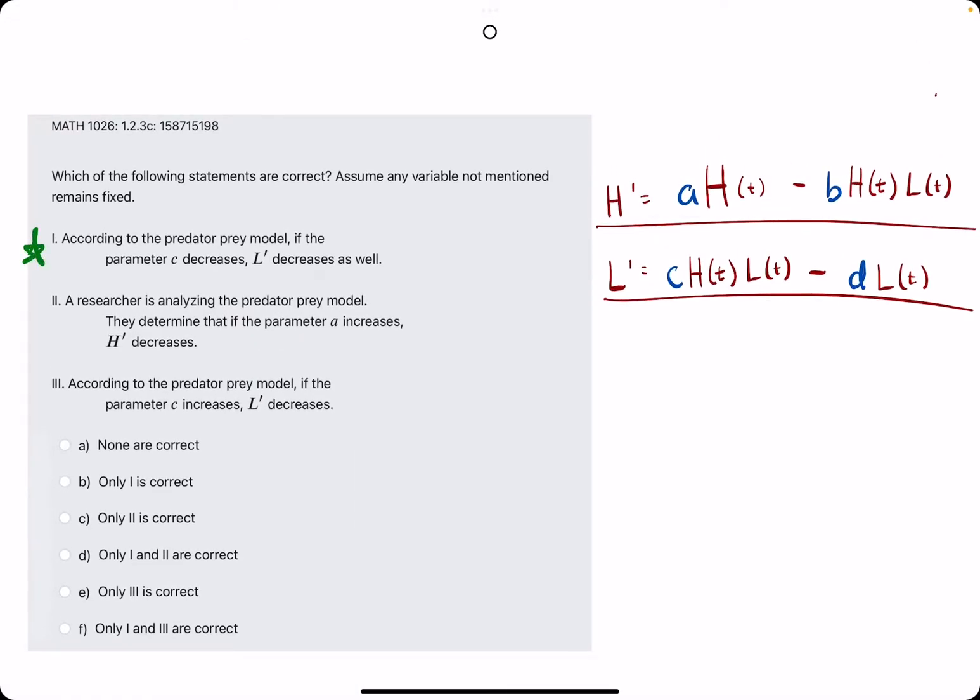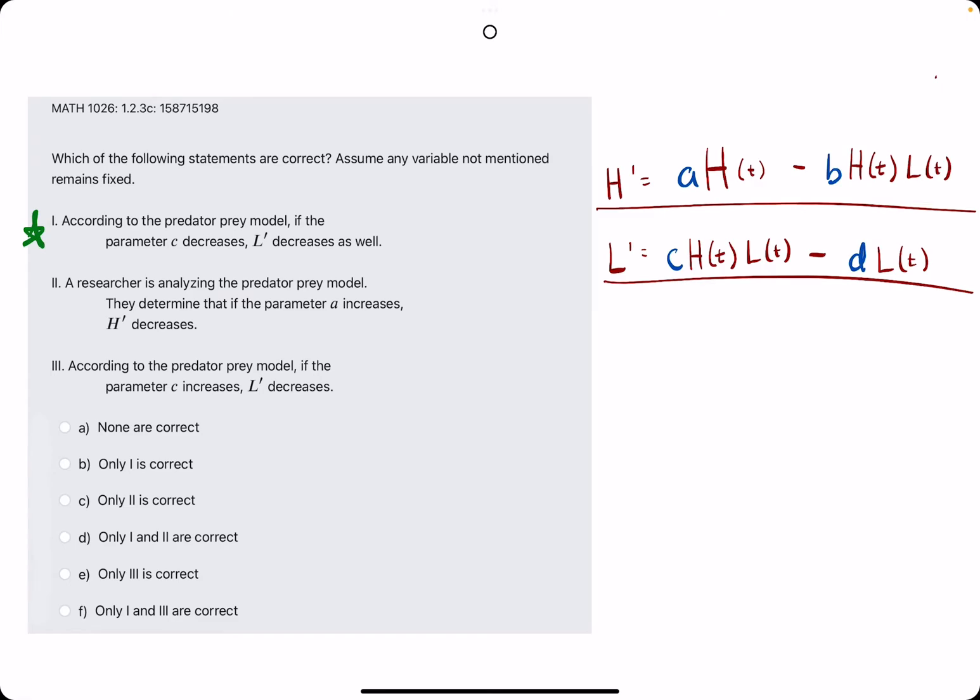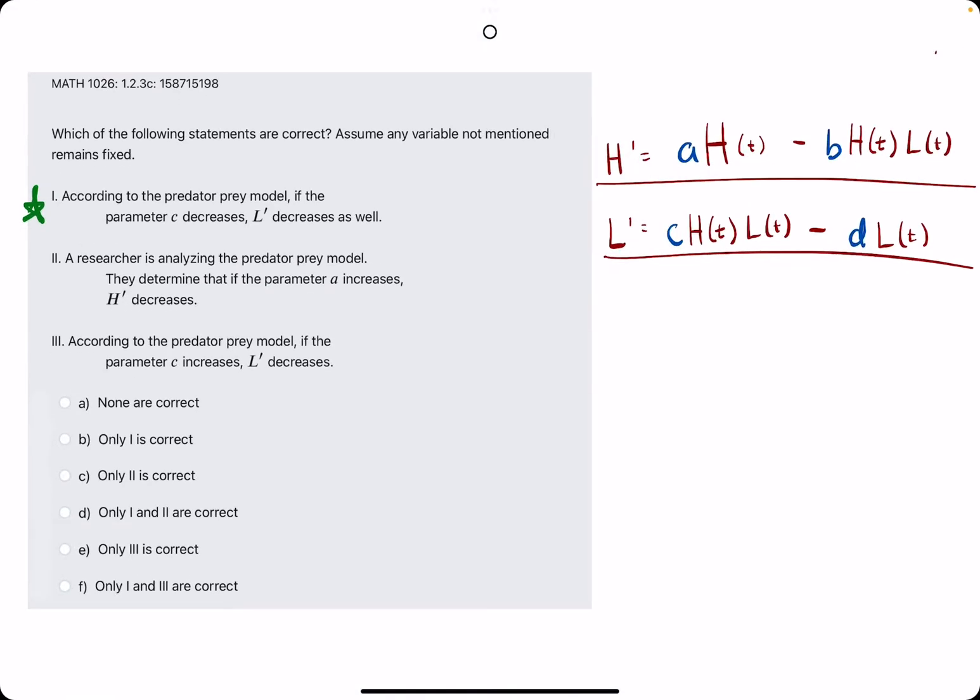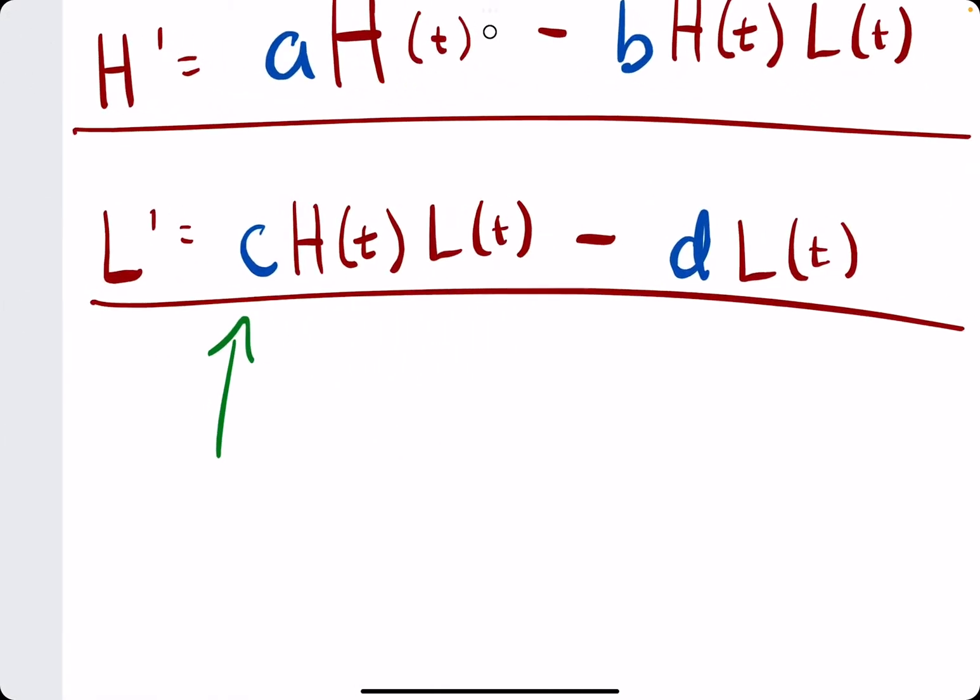So, using this predator-prey model, we are going through these statements and identifying which are true. Starting with number 1, they say according to the model, if the parameter C decreases, then L' decreases as well. Let's think about it.